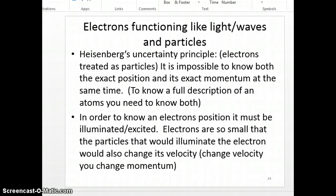Well then came another dude. His name is Heisenberg. And there is the Heisenberg uncertainty principle. So he treated electrons as particles. And he said it is impossible to know both the exact position and its exact momentum at the same time. So for an electron, we cannot know where it's at and its momentum at the same time. And you have to know both to fully describe an atom. In order to know an electron's position, it must be excited. And you should know by now if you excite an electron, it's going to jump to a different state. Electrons are so small that the particles that would be illuminated, the electron also changed its velocity.